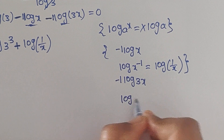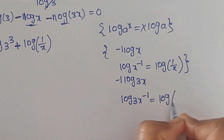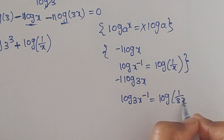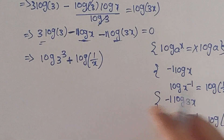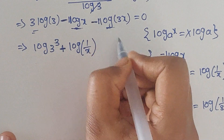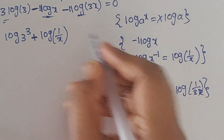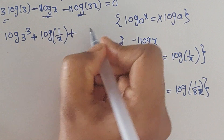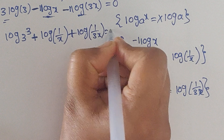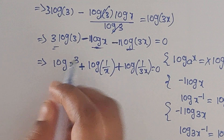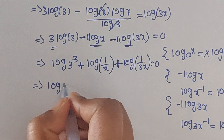For the minus log 3x term, again minus 1 is there, so we write log 3x to the power of minus 1, which equals log 1 over 3x. So in place of minus log 3x we write log 1 over 3x.